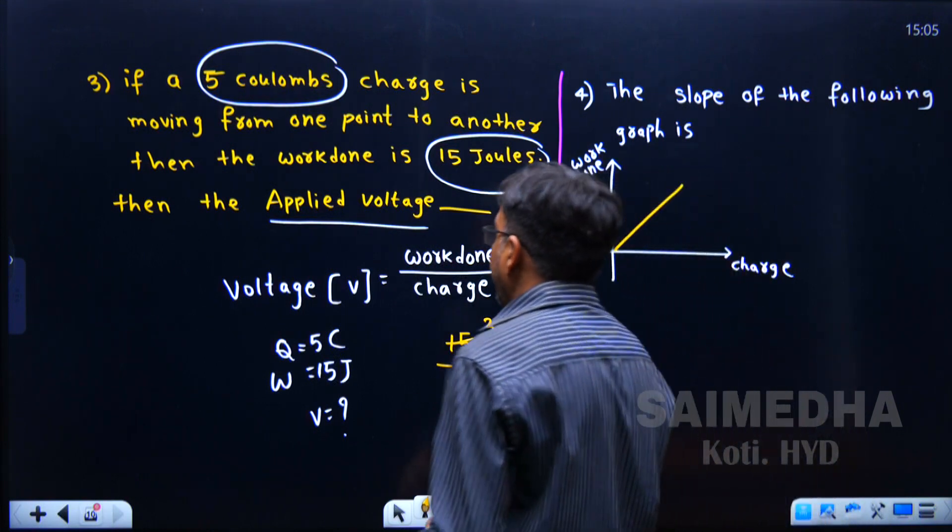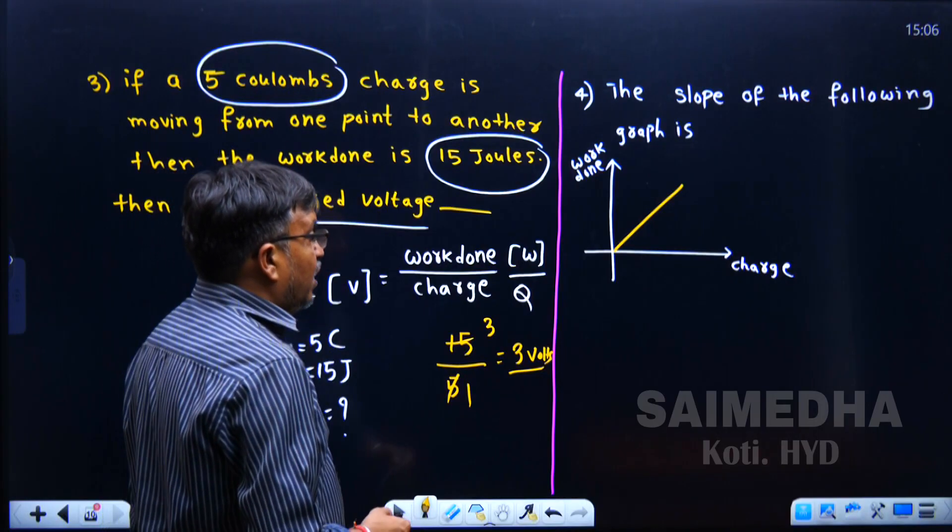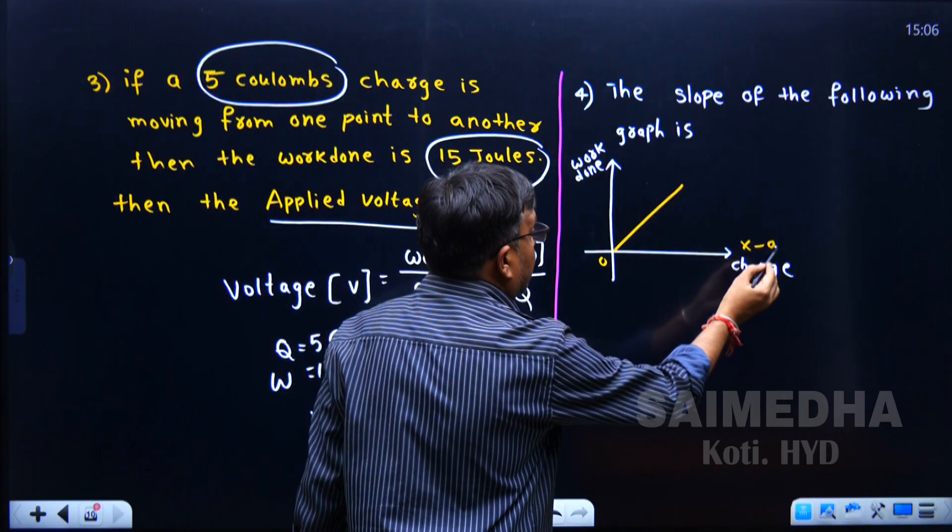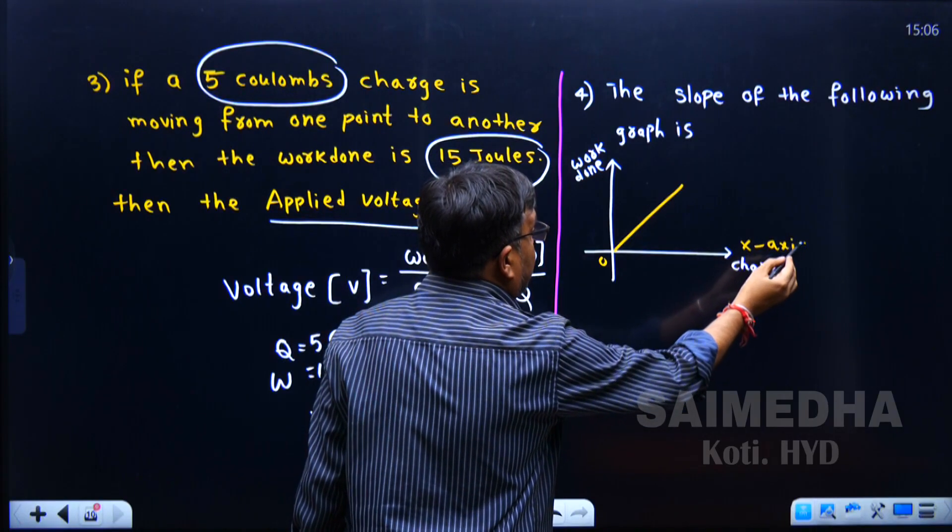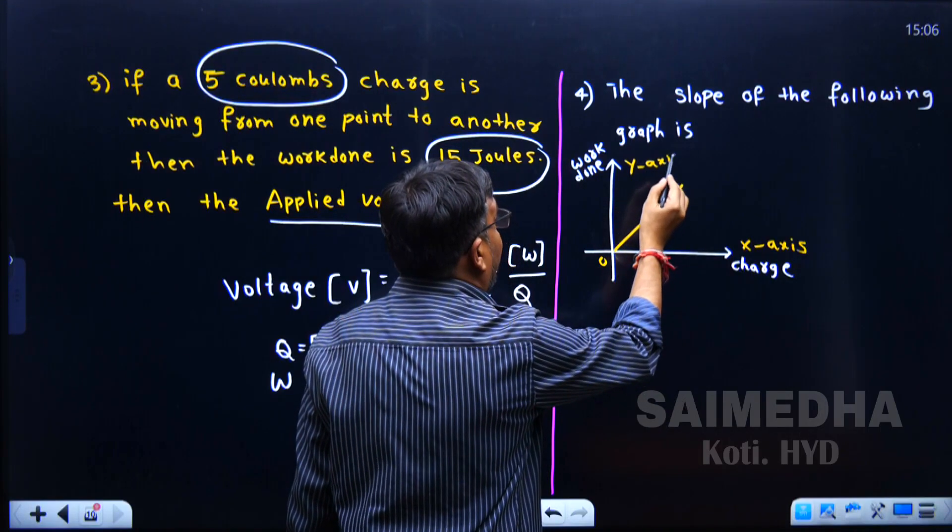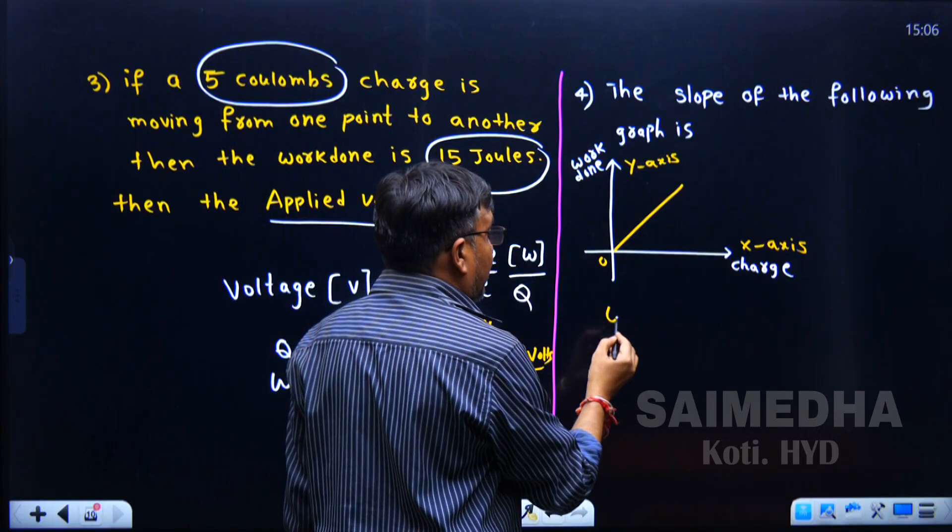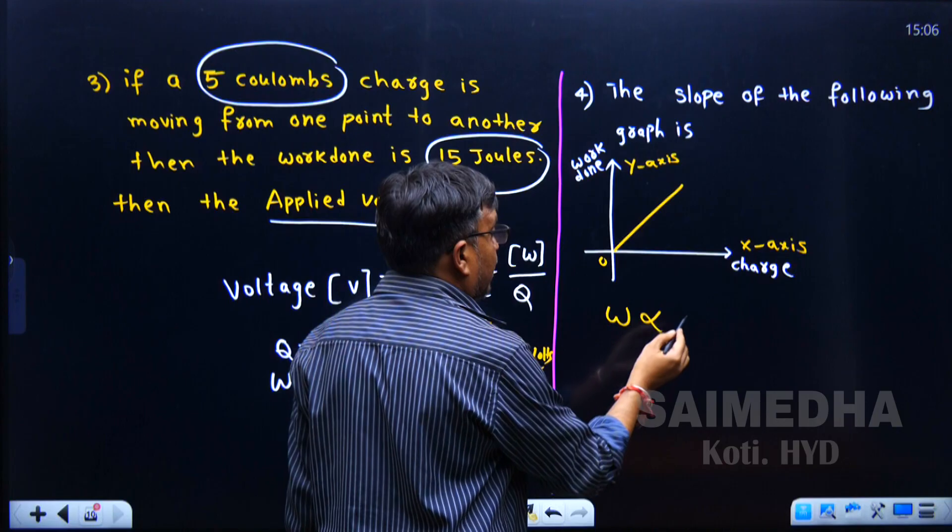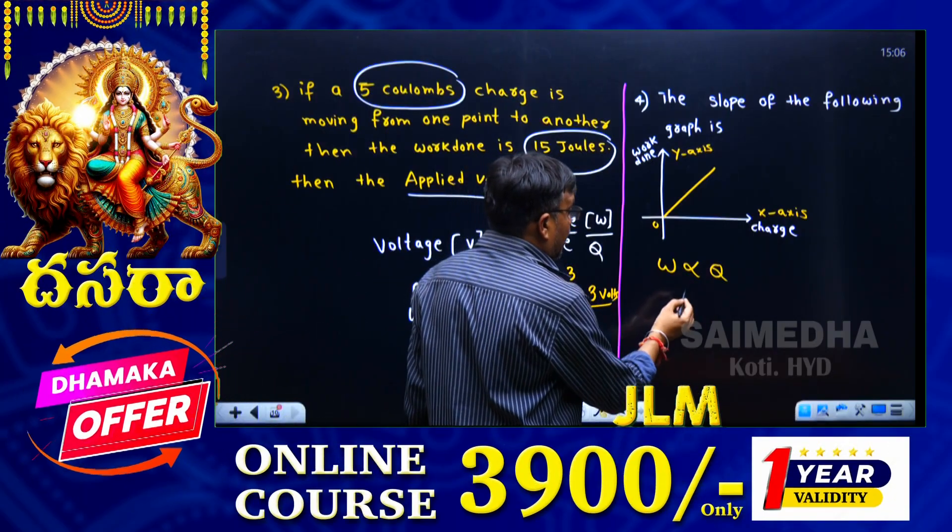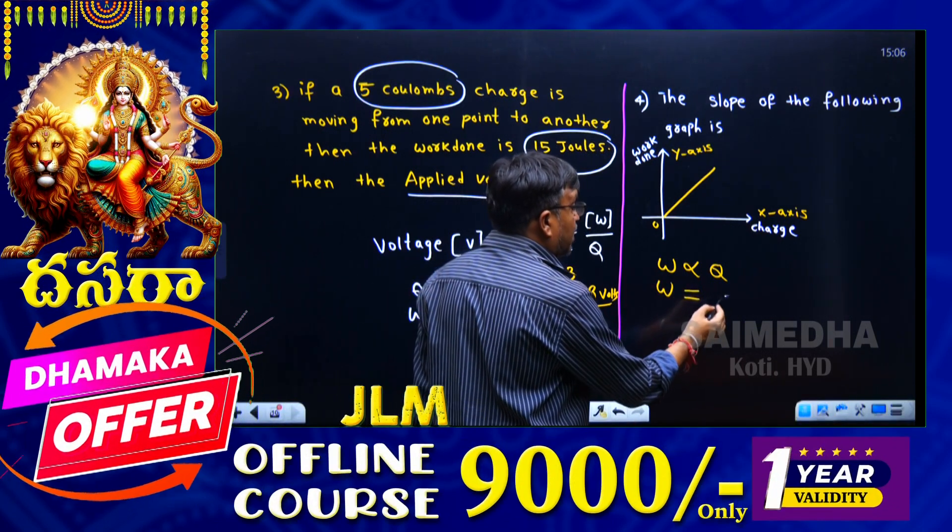Next question, the slope of the following graph. Here the graph is work done versus charge.